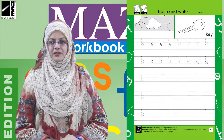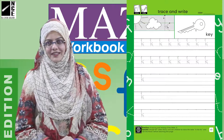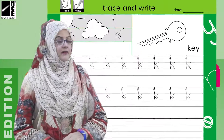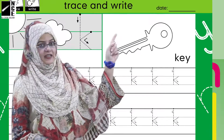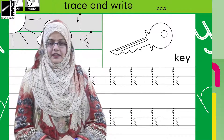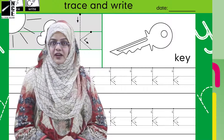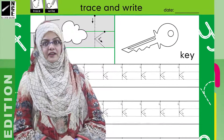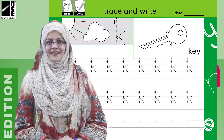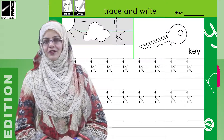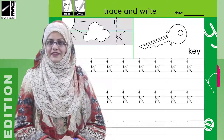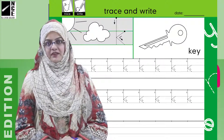Page number 63 پر چھوٹا سا کام ہے — بہت زیادہ بڑا نہیں، کیونکہ ہم already اسے پڑھ چکے ہیں۔ Page number 63 پر ہمیں ایک picture میں key نظر آ رہی ہے۔ There is a key over there. اس کے ساتھ کچھ lines میں letters لکھے ہوئے ہیں — what are they? They are 'kh'. Dotted lines میں 'kh' لکھے ہوئے ہیں — ہم نے ان کے اوپر neatly tracing کرنی ہے۔